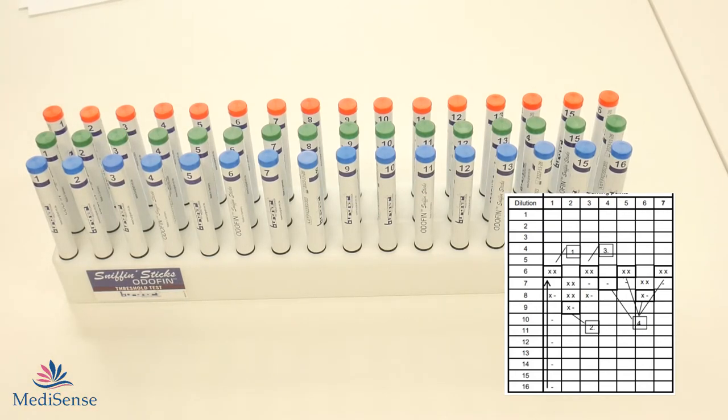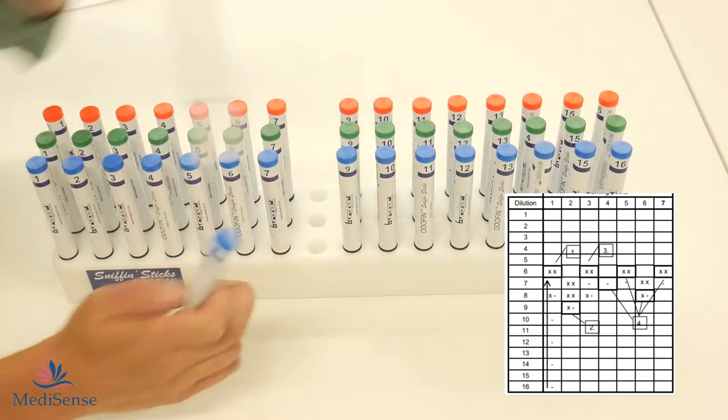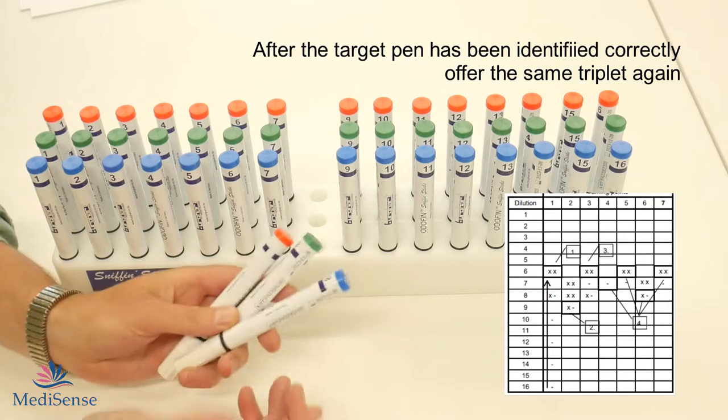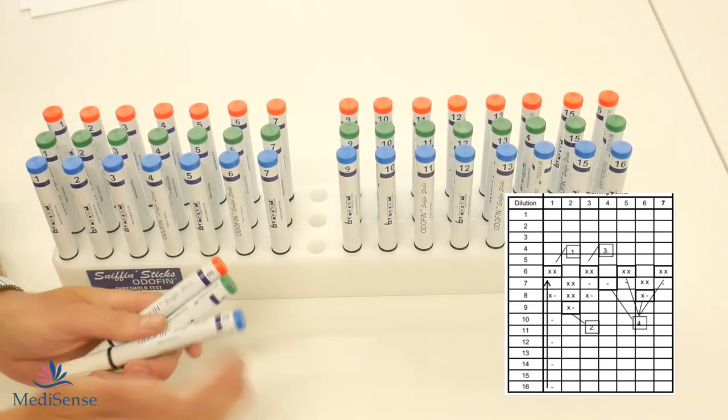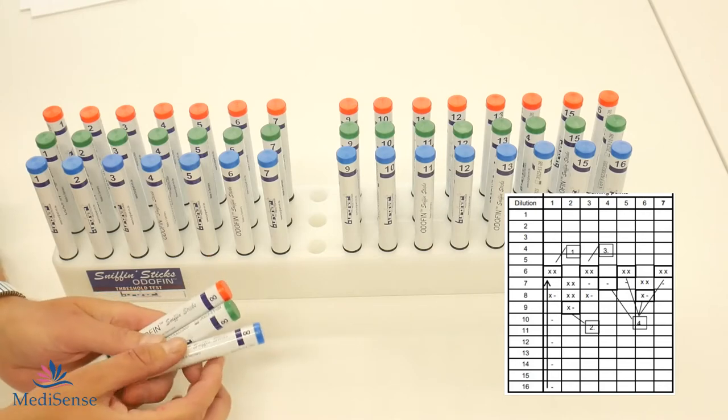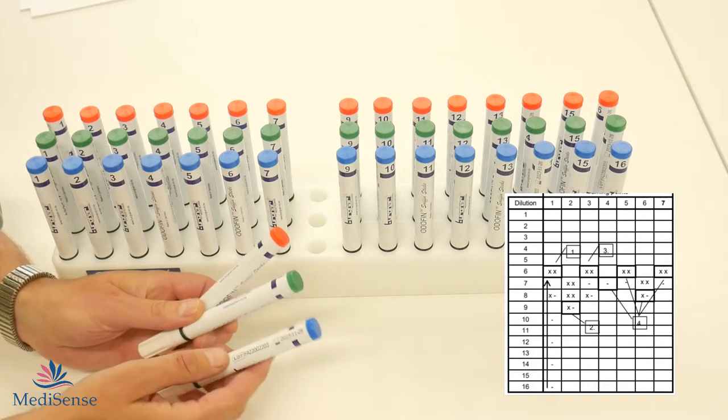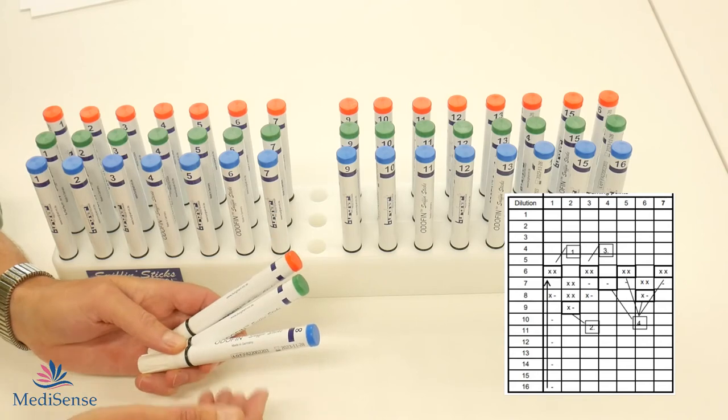In the manual there is an example of the test procedure and there you can see that the first round number 8 is guessed right. If the test person identifies the target pen correctly then after that you offer the exact same set of pens again. So in the example it is number 8 which is guessed right then you offer the number 8 pens again.